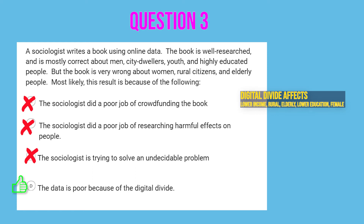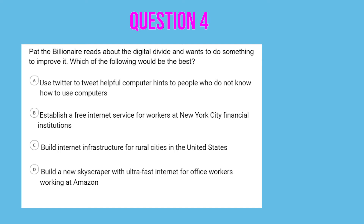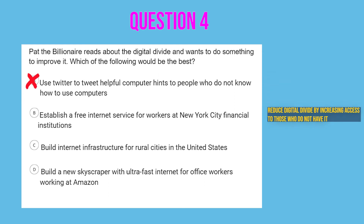The answer is D: the digital divide means that online data for certain groups of people will be underrepresented, and you'll have consequences as a result. The next kind of problem concerns how you solve the digital divide — this is the most common type in practice exams. Option A: use Twitter to tweet helpful computer hints to those who do not know how to use computers. People who are using Twitter already have access to computing, so that is not what we are looking for. Option B: establish a free internet service for workers at a New York City financial institution. People who work at a New York City financial institution already have computing, so this is not giving it to those who do not have it.